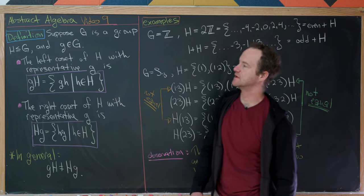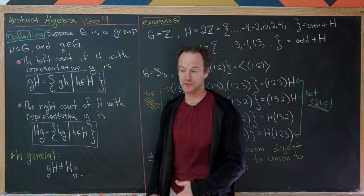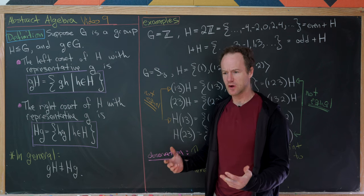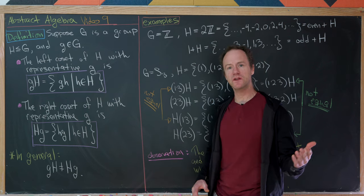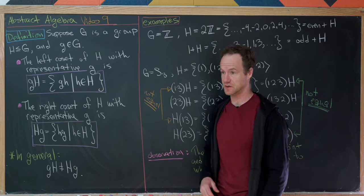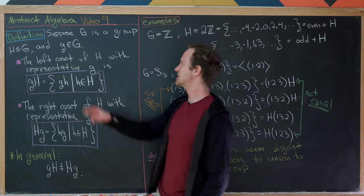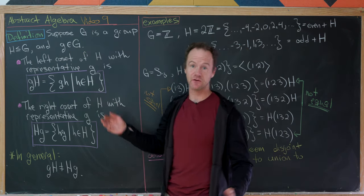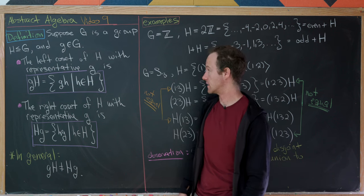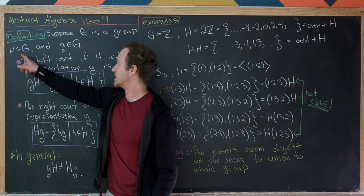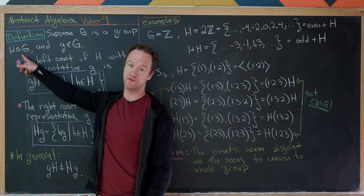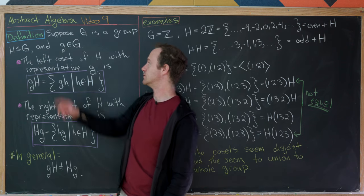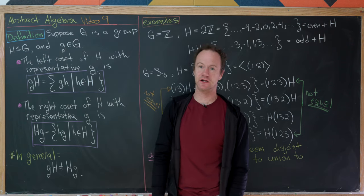This is the ninth video in a series devoted to abstract algebra, and today we're going to look at something called a coset. So let's jump right into the definition. Suppose we have a group G — this could be any group, abelian or non-abelian — and a subgroup of G, which we will call H, and an element of G, which we will call little g.